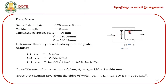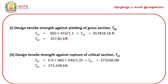By substituting the relevant values we are going to get the design tensile strength. The first one is the design tensile strength due to yielding of gross area, the second is rupture of net area, and the third is block shear. The strength against yielding of gross section is 357.81 kilo Newton, and the strength against rupture of critical section: TDN = 0.9 × AN × FU / γM1.